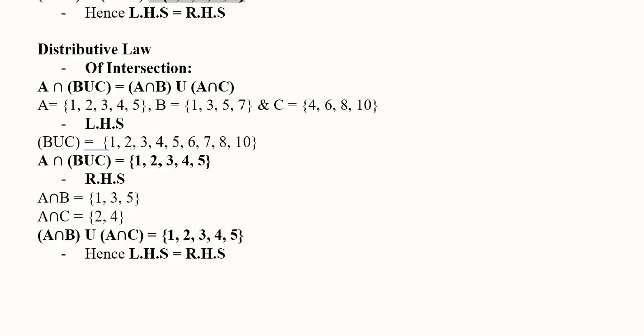Now we verify the distributive law using intersection distributed over union. With the same three sets A, B, and C, we find B∪C first, then take A∩(B∪C) to get our left-hand side answer. For the right-hand side, we calculate A∩B and A∩C separately, then take their union. Comparing both sides, they give the same answer, confirming that intersection distributes over union.